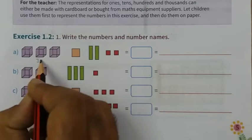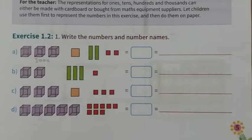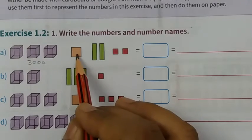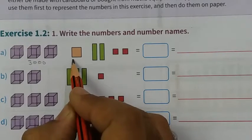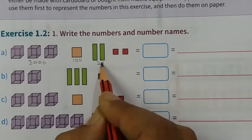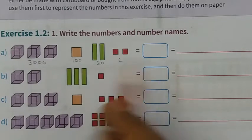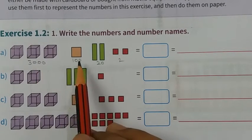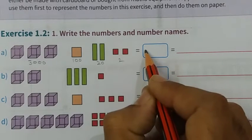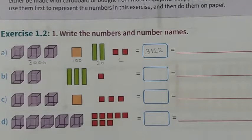You can write here 3000. Let's zoom this. 3000. And what is this? 100. 100. Two tens means 20 and 2. You can write it, just explain it. So 3000, 100, two tens, so 3122.